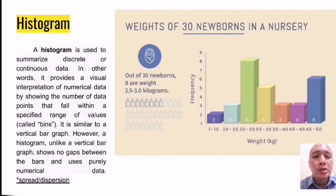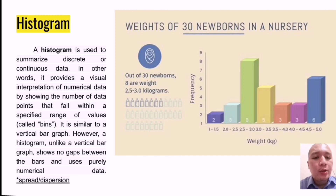Finally, our last method is the histogram, which is also a large topic by itself. A histogram is used to summarize discrete or continuous data — it provides a visual interpretation of numerical data by showing the number of data points that fall within a specific range of values called bins. It is similar to a vertical bar graph; however, unlike a vertical bar graph, a histogram shows no gaps between the bars and uses purely numerical data to show spread or dispersion.